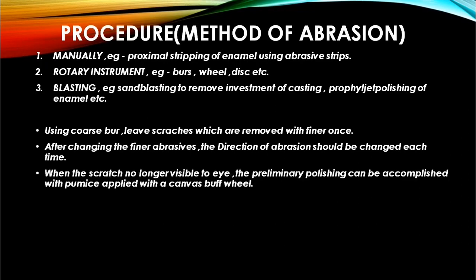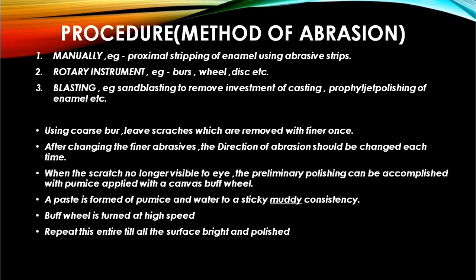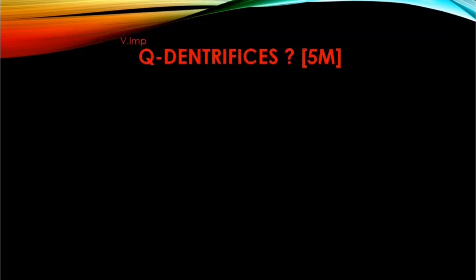When no visible scratches remain, a buff wheel at high speed is used for primary polishing, in which a paste of pumice and water — which is sticky and muddy in consistency — is used. Repeat until a smooth and polished surface is obtained. At the end, cleaning with soap and water is done, followed by using a buff wheel at high speed.